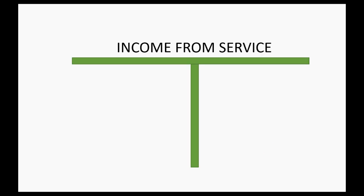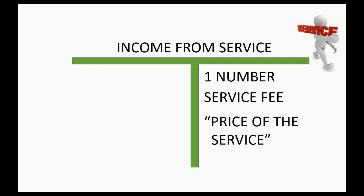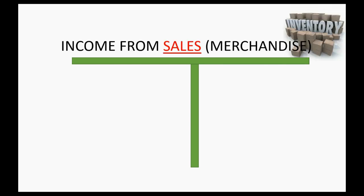We have already learned how to record income from a service. It's just one T-account that represents the total money that came in from what we earned. In previous cases, it was just one number — the service fee — and it represented the price of the service. You previously made a credit to this income account for exactly what the customer gave you. However, when we have merchandise that we're selling, we still have an income account that represents the total money that came in from the customer for merchandise sales. But in the case of a merchandise company, we're not dealing with one number in the income section.